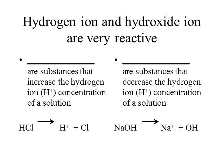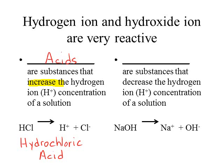Hydrogen ions and hydroxide ions are very reactive in the cell, and we have terms to discuss compounds that either release hydrogen ions or hydroxide ions. Acids are substances that increase the hydrogen ion concentration in a solution. The example here is hydrochloric acid, HCl, which you used in laboratory last week. When it ionizes in water, it forms a hydrogen ion and a chloride ion, releasing hydrogen ions and causing the solution to be more acidic.